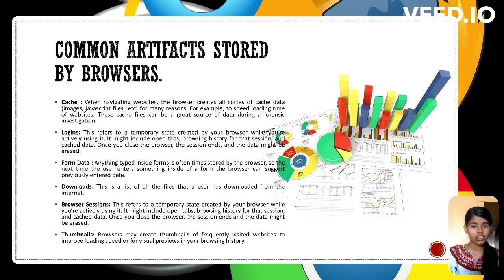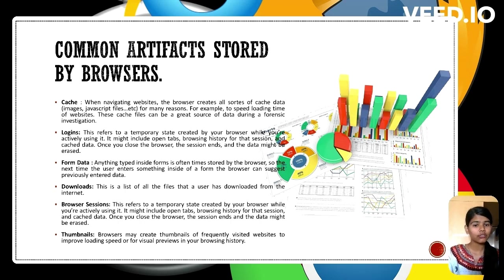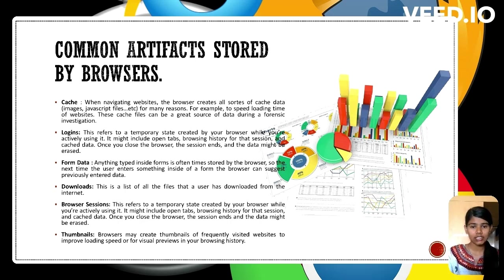More browser artifacts include: cache — stored web elements like images and scripts to speed up loading times; logins — record session data such as open tabs and browsing history, which may be deleted after the session ends; form data — saves information entered in forms for future auto-filling; downloads — keeps a list of files downloaded by the user; browser sessions — similar to logins, interact with active browsing data that might be erased after the session; and thumbnails — generate previews of frequently visited sites for quicker access and visual navigation.